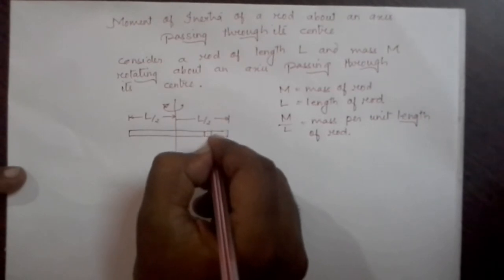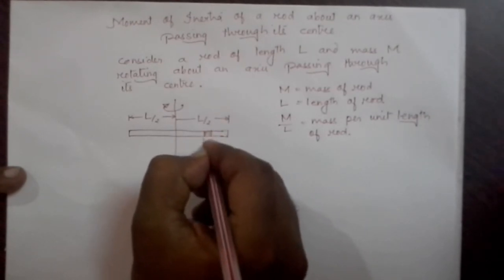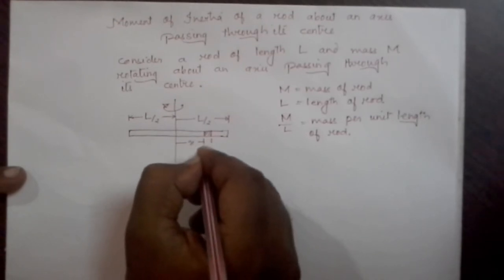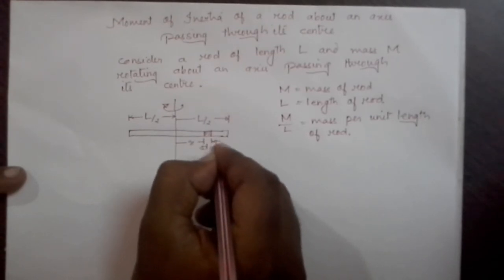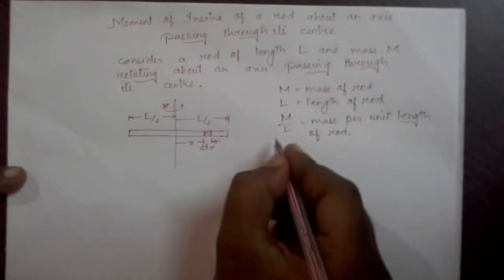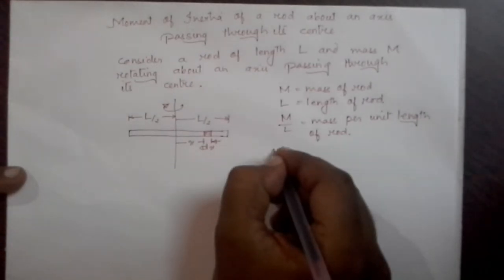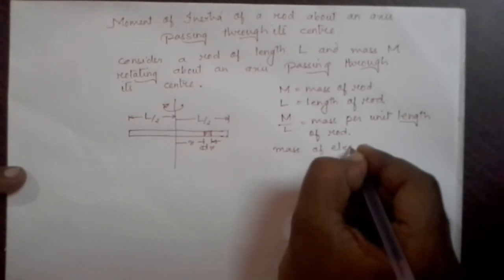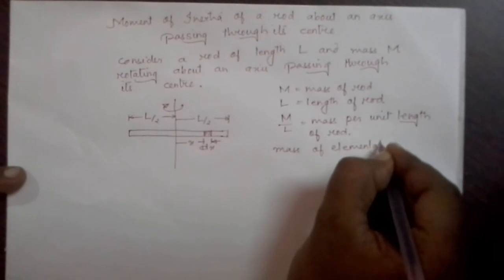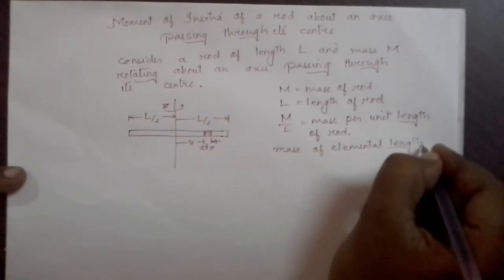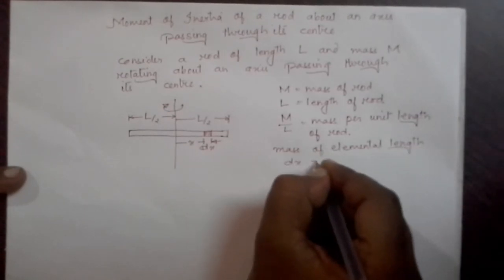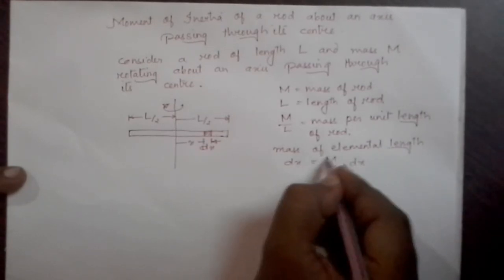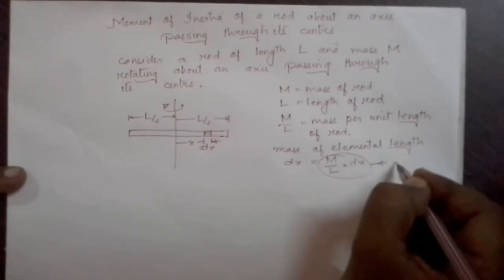Let us consider a small elemental length dx on the rod at a distance of x from the axis of rotation. Then the mass of elemental length dx will be equal to M by L into dx. Let us call this whole term to be dm.